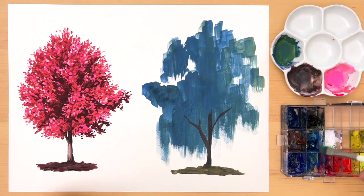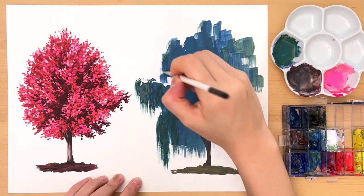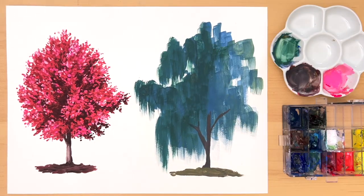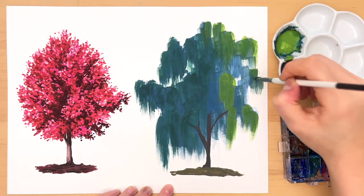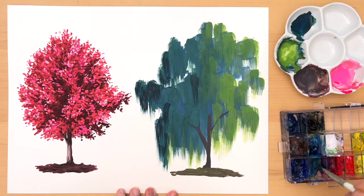For this willow tree, my light source is going to be on the right side instead of the left. So for the shadow part right now, I'm using a dry brush to create the willow tree texture on the left side first. And as I move to the right side, I'm mixing more yellow to my mixture to make it lighter.